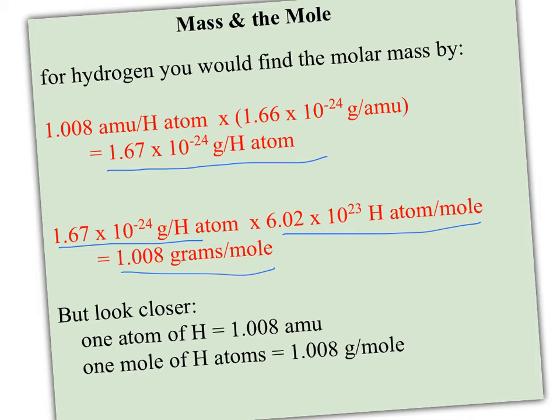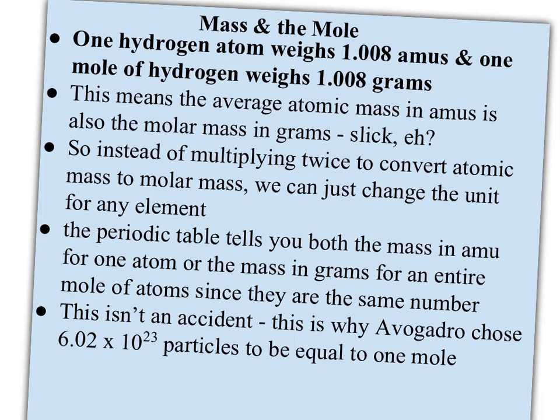But now wait a minute. One atom weighs 1.008 AMU, and one mole weighs 1.008 grams. Those are the same number. Well, the really cool thing is, it happens for every single element. The atomic mass and the molar mass are the same number, it's just the unit that changes. So instead of having to multiply by Avogadro's number and by the little tiny 1.66 times 10 to the minus 24th, you don't have to do that. Avogadro deliberately came up with his number, 6.02 times 10 to the 23rd particles, to be equal to 1 mole. So the periodic table tells you both the mass in AMU for an atom, or the mass in grams for an entire mole. True for every single element on there.